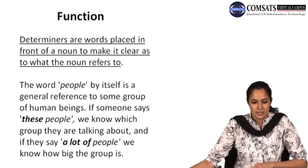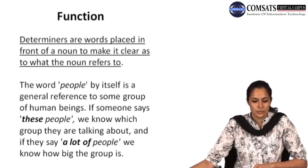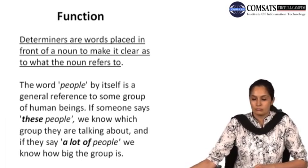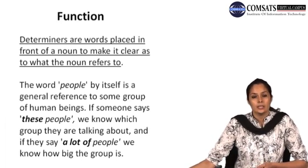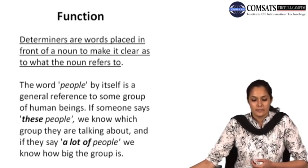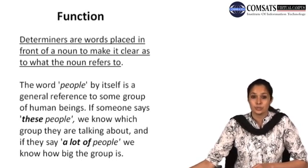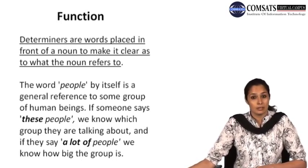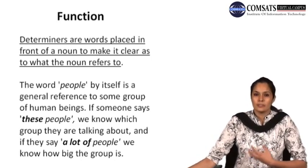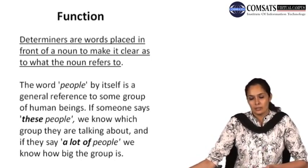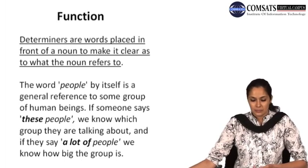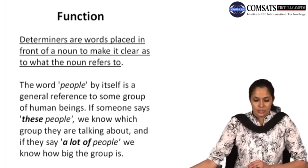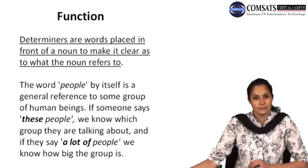We are going to talk about the function and classes of determiners. The function of determiners is that they are words placed in front of a noun to make it clear as to what the noun refers to. This is a very important and simple aspect of English language. A basic example: the word 'people' by itself is a general reference to some group of human beings. If someone says 'these people', we know which group they are talking about, and if they say 'a lot of people', we know how big the group is.